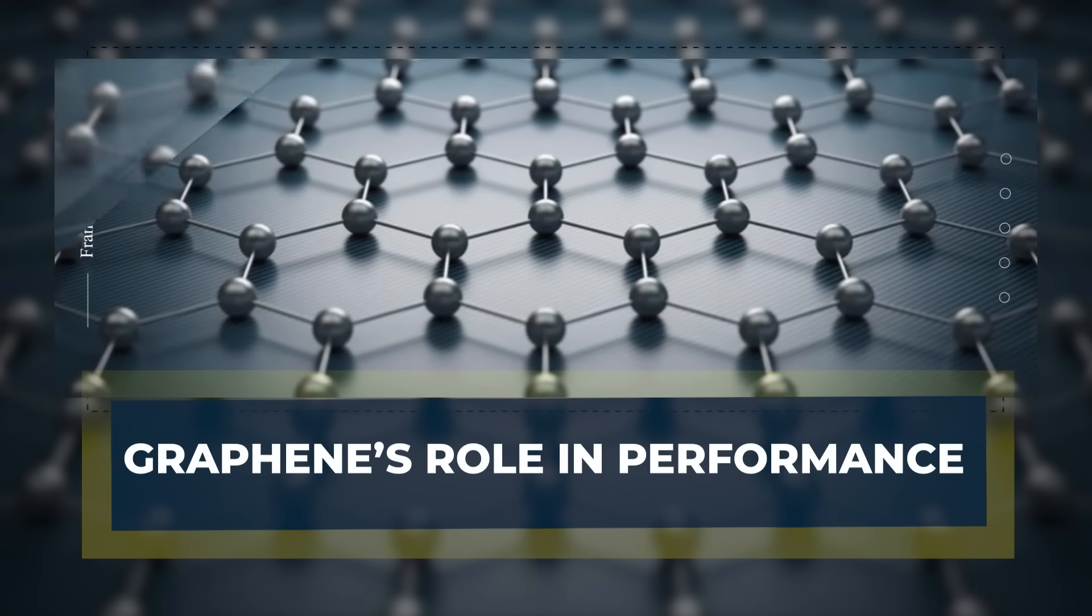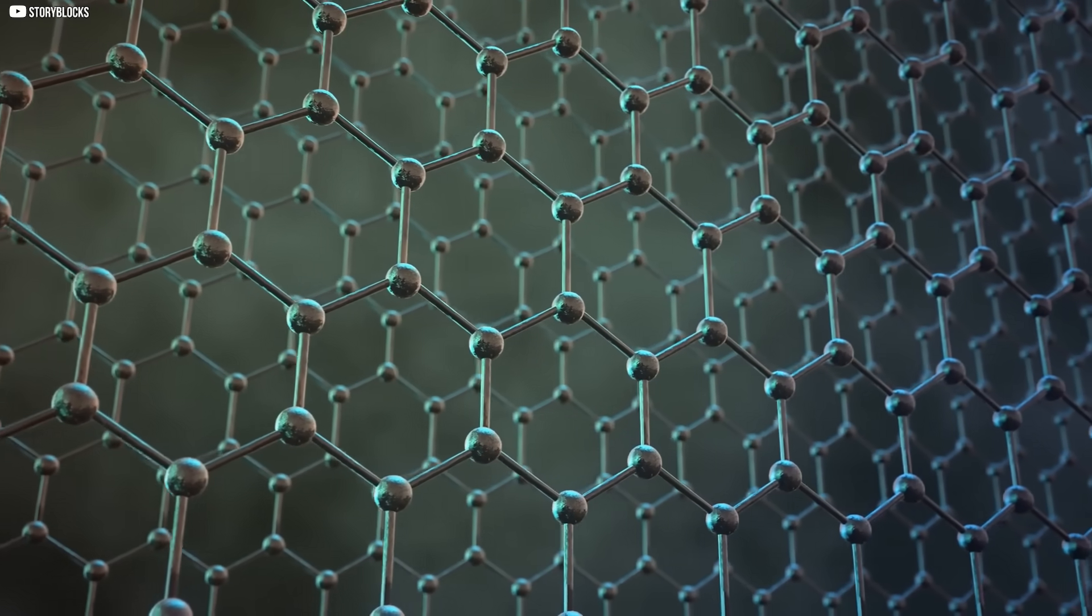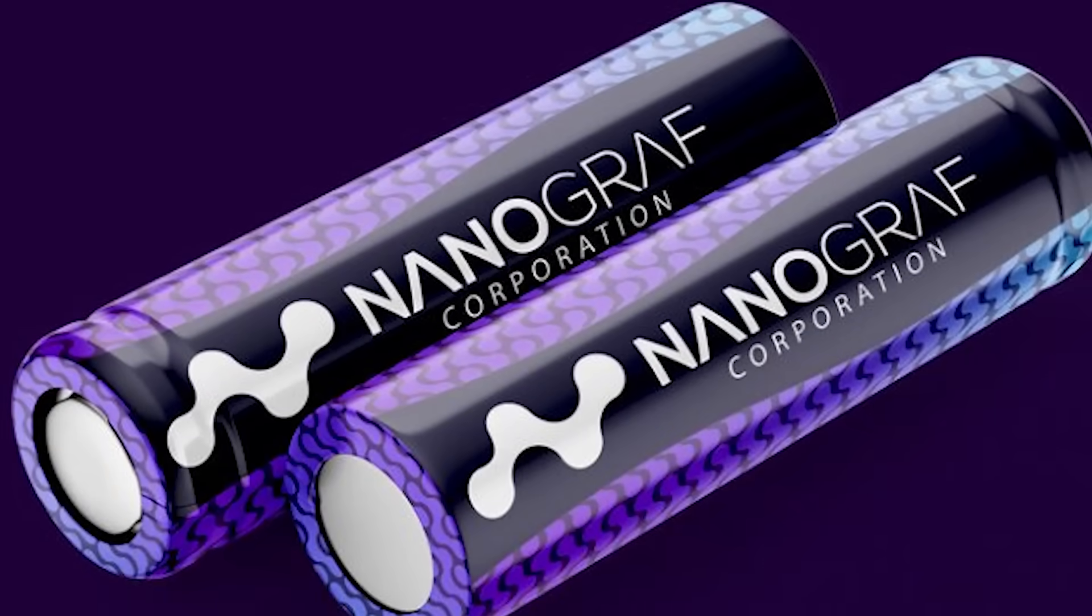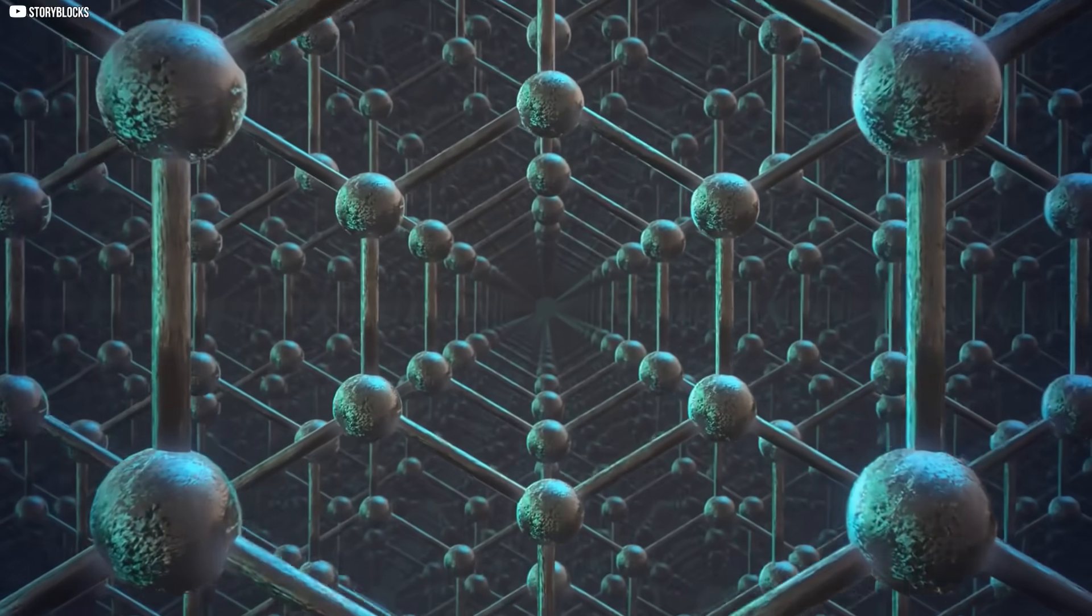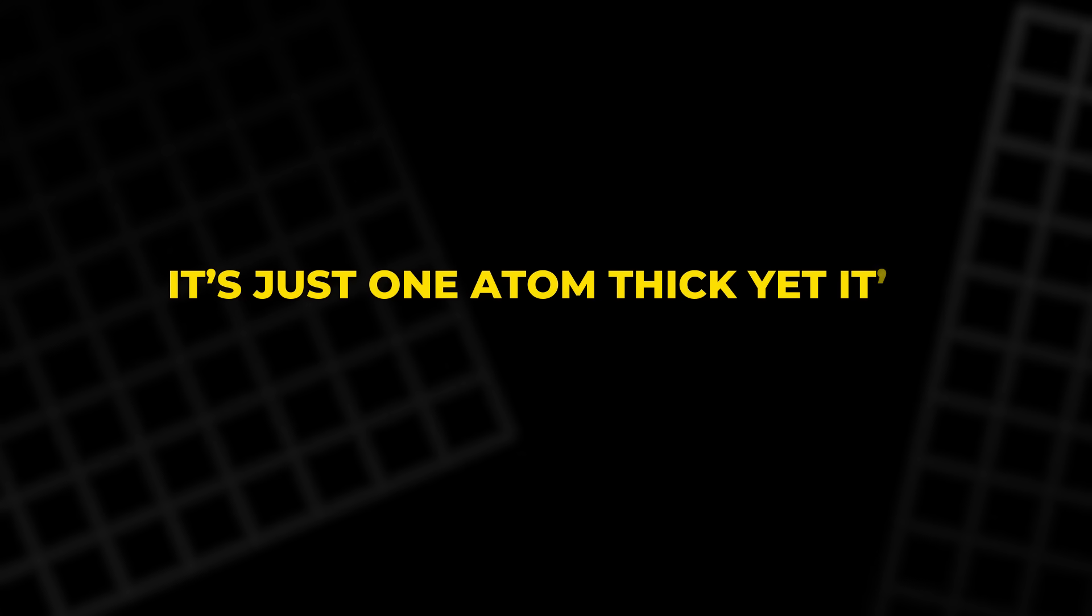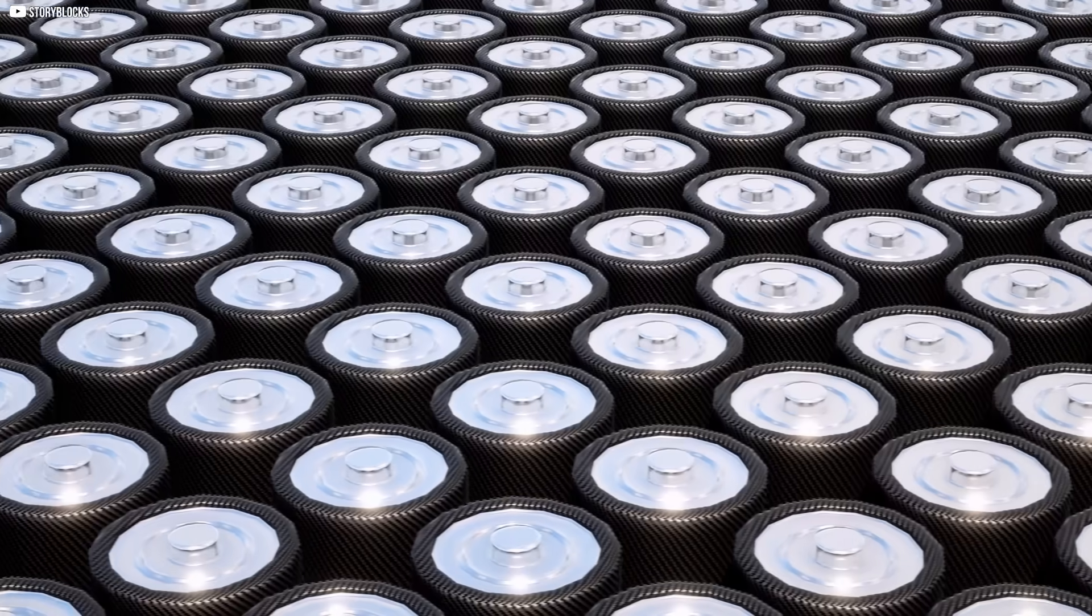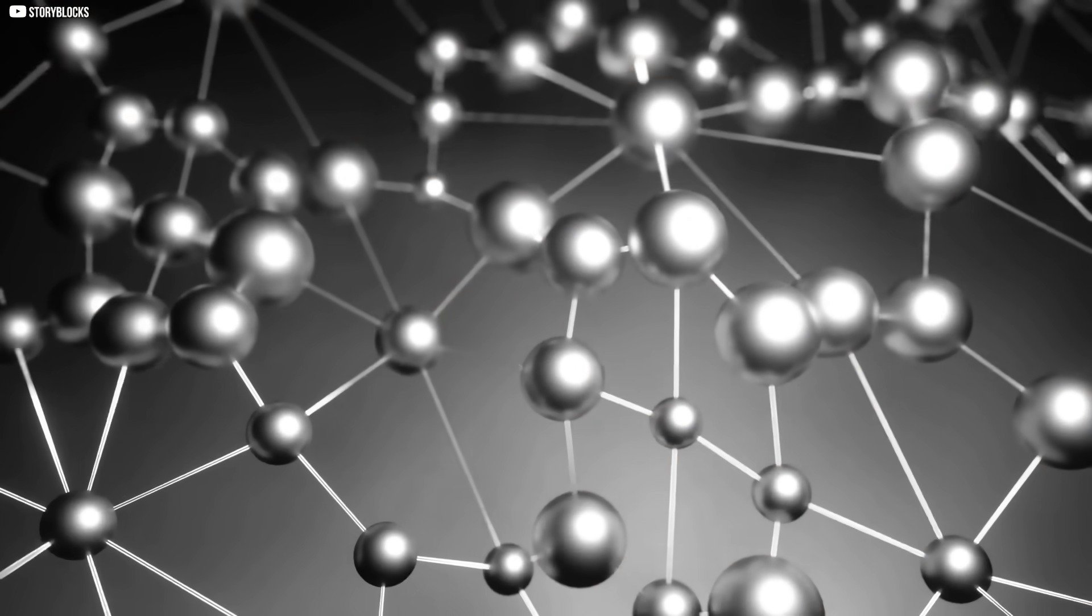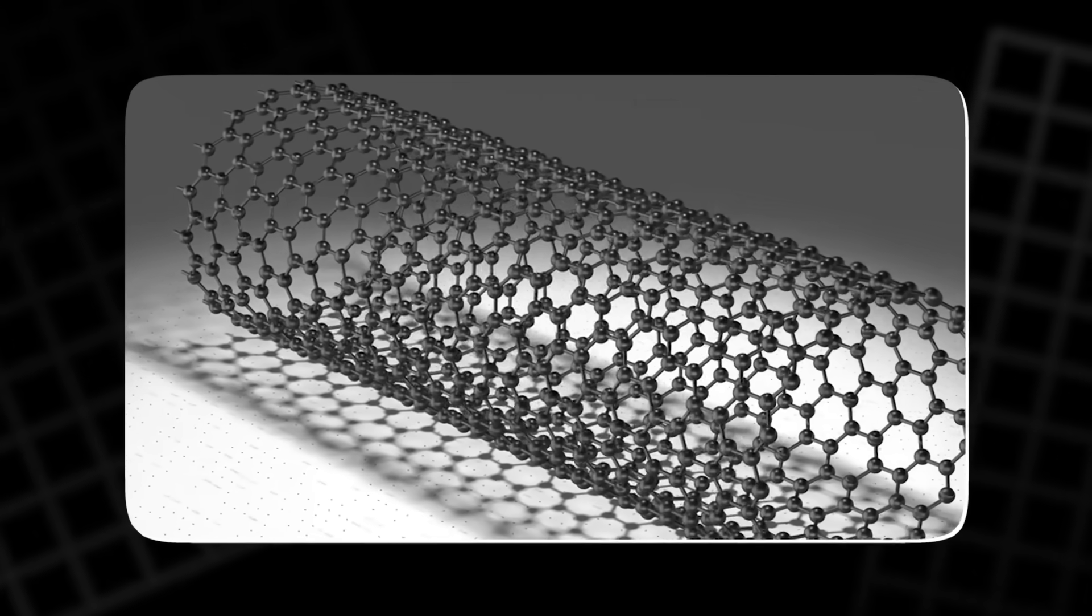Graphene doesn't look like much. It's invisible to the eye, thinner than anything you can touch. But its impact on Nanograph's battery is massive. At its core, graphene is a single layer of carbon atoms arranged in a honeycomb pattern. It's just one atom thick, yet it's over 200 times stronger than steel. More importantly for batteries, it's one of the best conductors of electricity we've ever discovered. In Nanograph's design, graphene plays two roles.